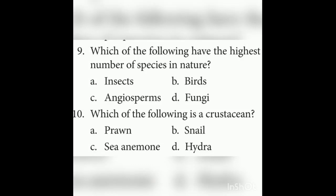Ninth question: Which of the following has the highest number of species in nature? Phylum Arthropoda — insects are the largest group — so Arthropoda has the highest number of species in nature.